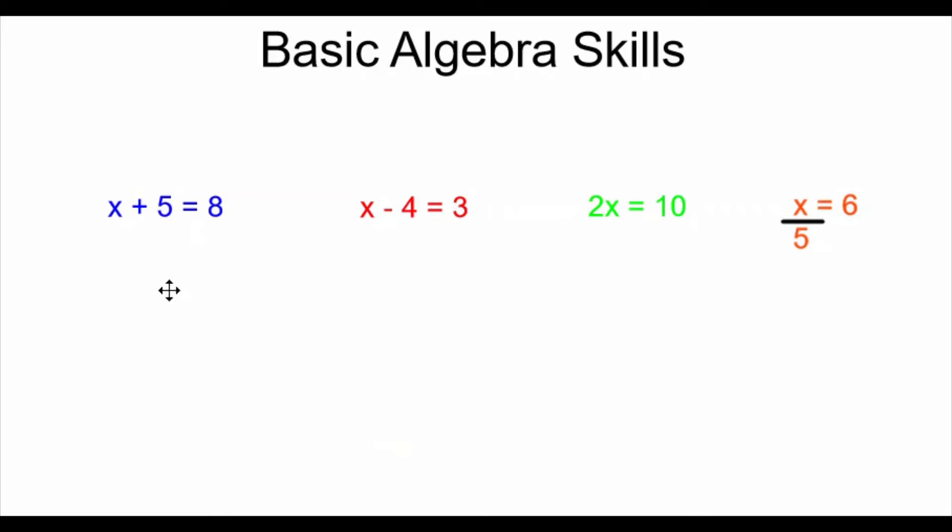Let's look at addition as our first example. We have x plus 5 equals 8. I want that 5 on the other side of the equal sign so my x can be alone. The way to do that is to do the opposite of addition. A 5 is being added, so I will subtract a 5.